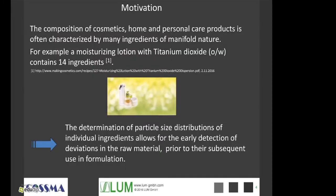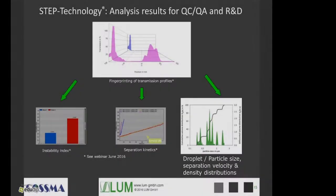One can easily imagine that the determination of particle size distributions of individual ingredients allows for the early detection of deviations in the raw material prior to the subsequent use of this ingredient in the later formulation. Related to product stability, see the other webinar of June please.